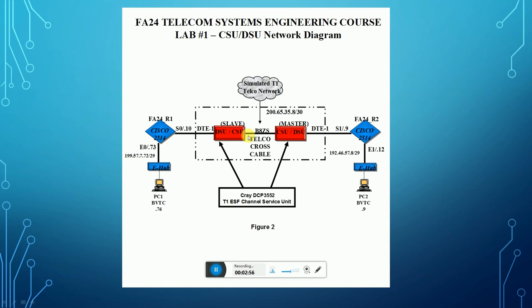This is the DSU, CSU. The telecom cross cable is between this section and this section. This is another master unit, and this is the slave. This is the master CSU/DSU.